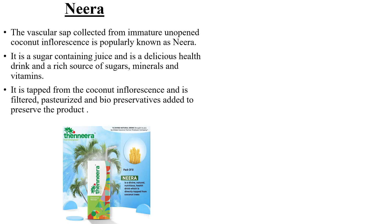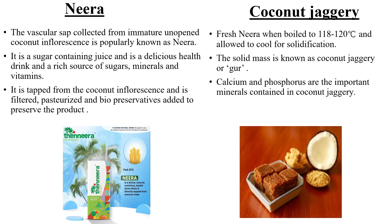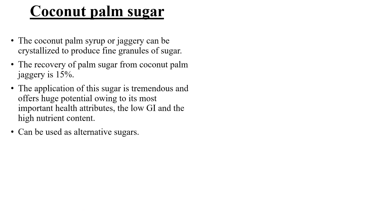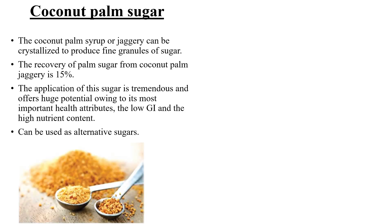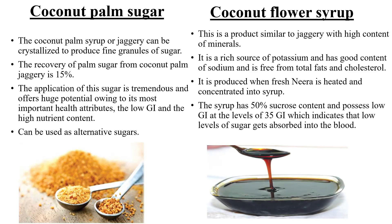Neera is a vascular sap collected from immature, unopened coconut inflorescences. It is used as a biopreservative and can be pasteurized. When fresh Neera is boiled to 118-120 degrees Celsius and allowed to solidify, it forms coconut jaggery, also known as gur, which is a rich source of calcium and phosphorus. Coconut palm sugar is coconut palm syrup crystallized into fine granules and can be used as an alternative sugar. Coconut flour syrup is an inflorescence-based by-product similar to jaggery, with high mineral content and 50% sucrose. It possesses a low glycemic index of 35, indicating low levels of sugar absorption into the blood, making it beneficial for diabetic patients.